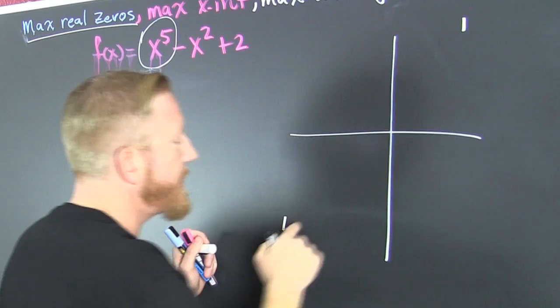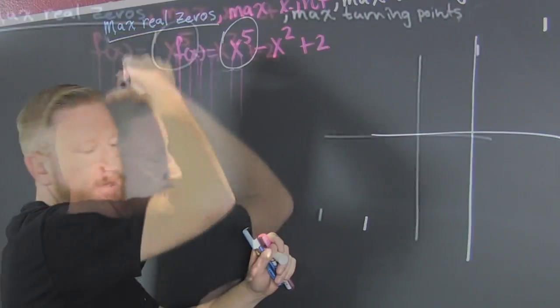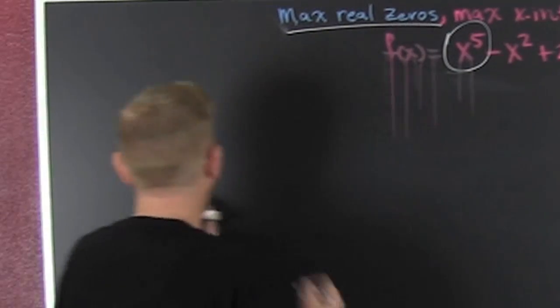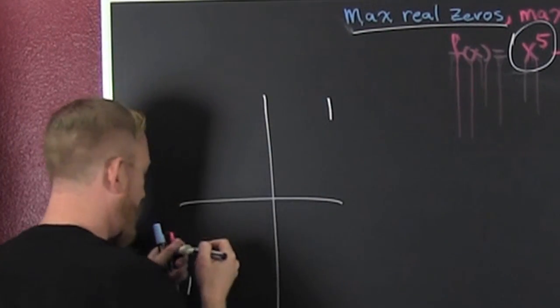We know that it starts down low and ends up high because that's fifth degree and that's positive. Now what this polynomial can do all kinds of things, and we know it starts there, ends there.